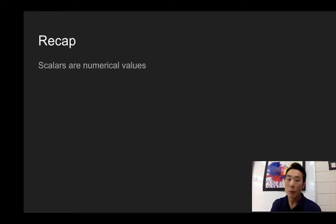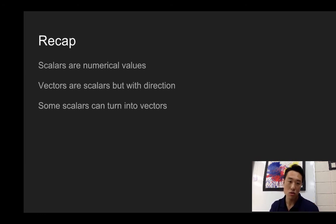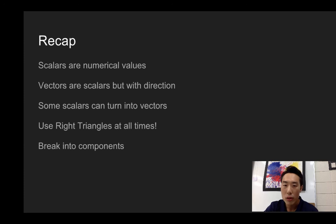All right. Now, let's do a recap. Scalars are numerical values and numerical values alone. If you add a direction, don't make sense. Vectors are scalars but with direction, okay? It makes sense if you have a direction. Some scalars can turn into vectors. How? By adding a direction. Use right triangles at all times. Now, you might be like, I'm like an isosceles triangles kind of guy. I only work with acute angles, and I'm like, sorry, man. Like, you and your acute angles, you can spend your own time after school, but in here, it's right triangles only. Okay, and most importantly, purpose of this entire video, you need to break your angled components or angle vectors into components, x and y components. It makes our lives a lot easier, okay? And always, always remember, SOH-CAH-TOA.